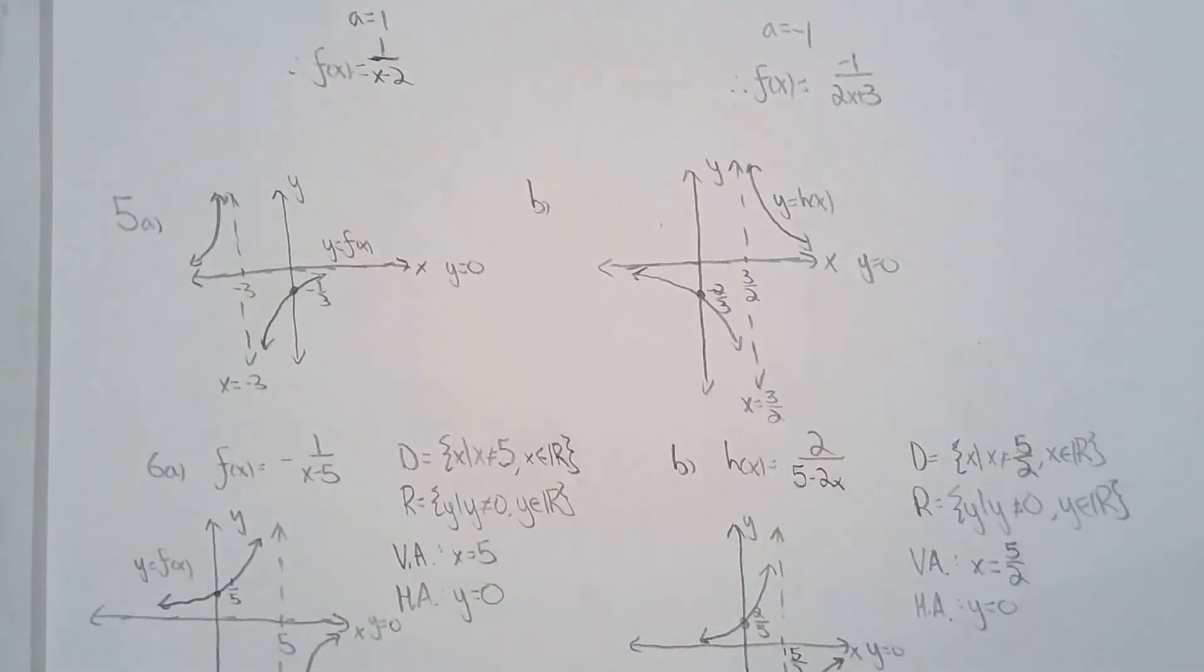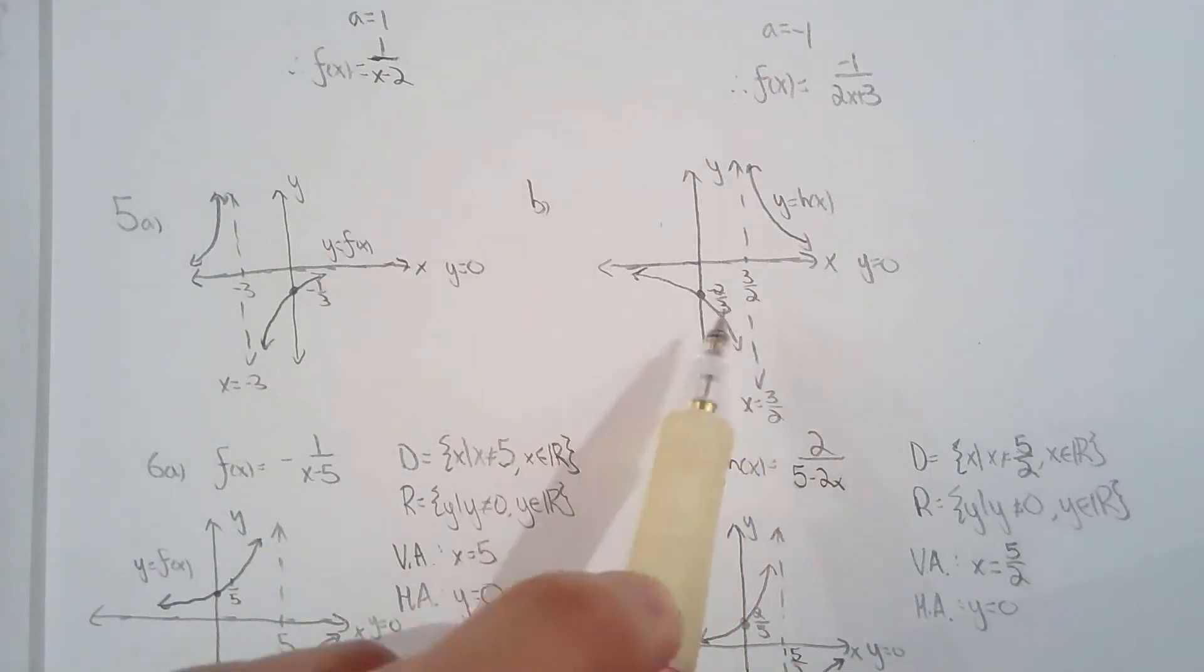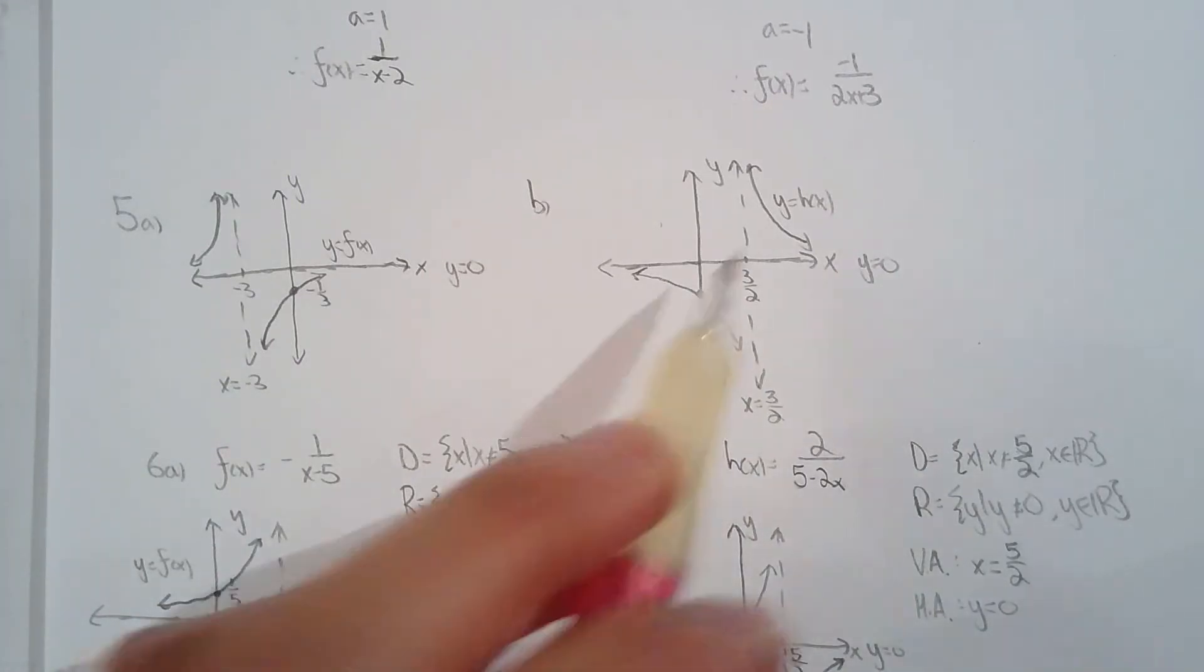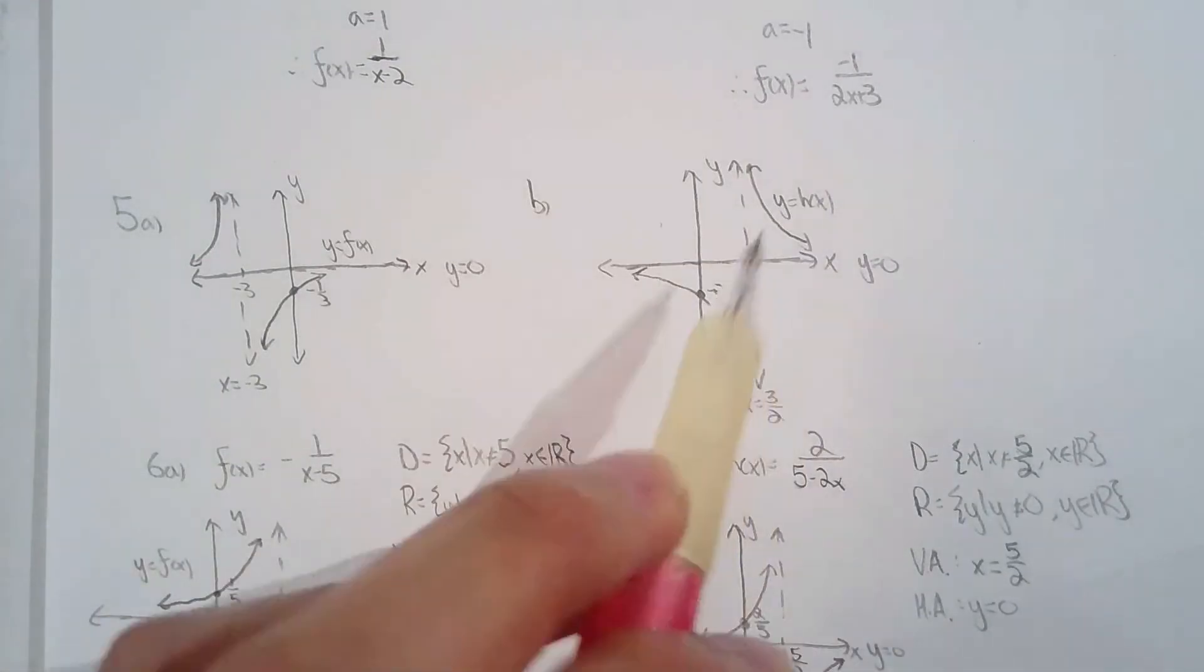So for question five, they asked us to sketch the function. So the way I sketch the function was using my shortcut. I used my asymptotes and my y-intercept and I was able to piece everything together. So by using the shortcut, you don't need to find end behavior and the behavior near the vertical asymptote.